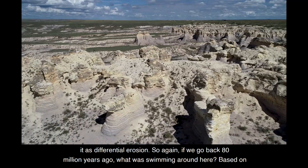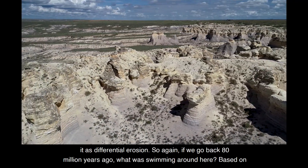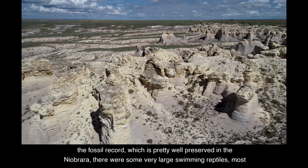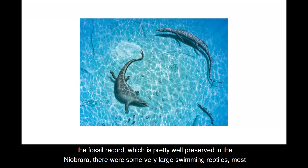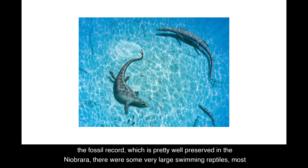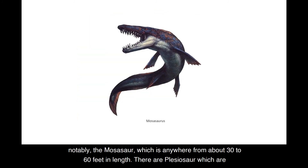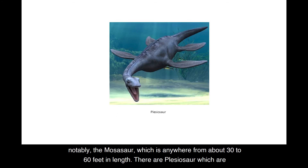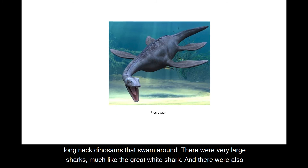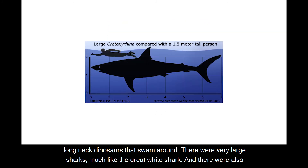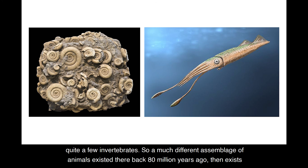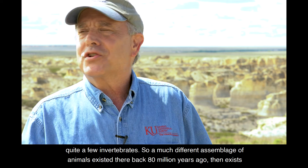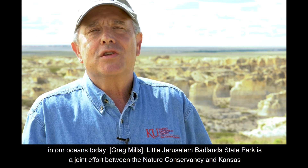So again, if we go back 80 million years ago, what was swimming around here? Based on the fossil record, which is pretty well preserved in the Niobrara, there were some very large swimming reptiles — most notably the mosasaur, which is anywhere from about 30 to 60 feet in length. There are plesiosaurs, which are long-necked animals that swam around. There were very large sharks, much like the great white shark. And there were also quite a few invertebrates — a much different assemblage of animals than exists in our oceans today.